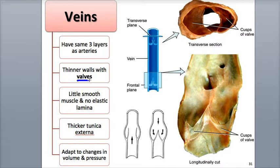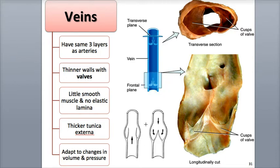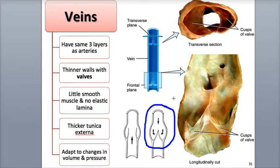A big structural difference between arteries and veins is that veins have valves, particularly the veins in the arms and legs, which are thin flaps of tunica interna that extend into the vein's lumen. Because blood is flowing through veins at a lower pressure, venous blood can slow down or back up, but is prevented from flowing backwards because of the valves, which ensure a one-way flow to the heart.